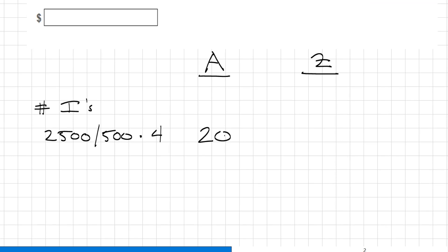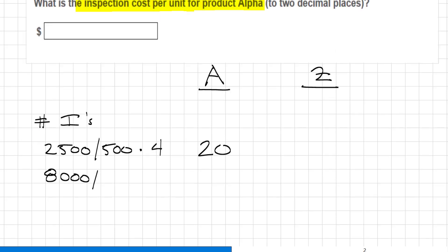Okay, then we can do for the product zeta. And that will be 8,000 divided by 1,000 multiplied by 1. Okay, that will be 8 inspections. Now we have the total number of inspections, everybody. 28.